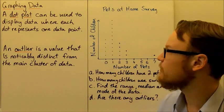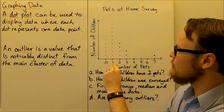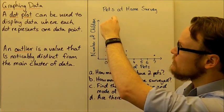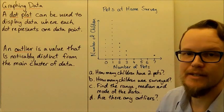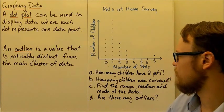The mode is the most common, and we can see here that the absolute most common, the one that was answered the most here was one pet. So one pet is the mode number of pets.